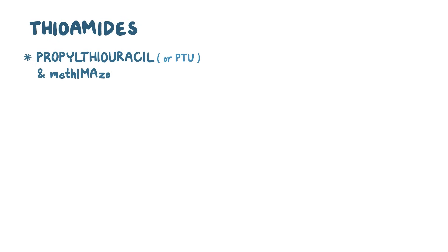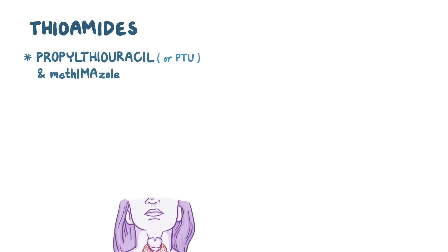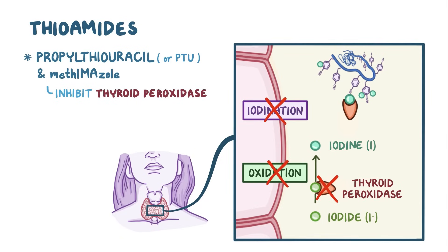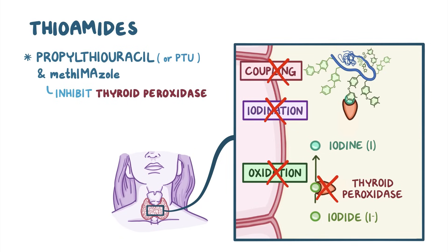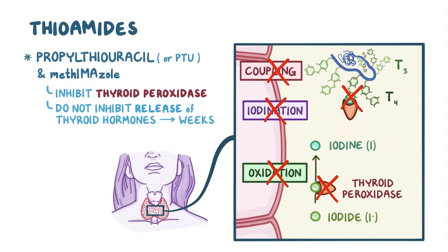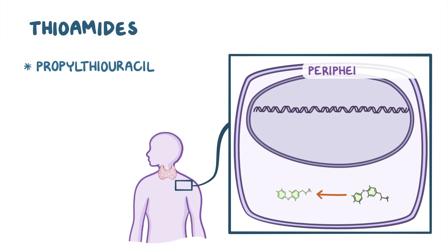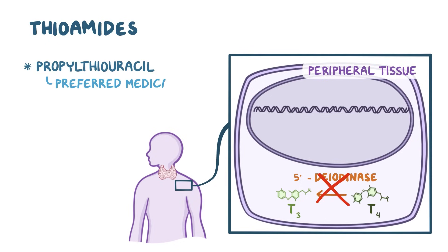Next, we have thioamides, which include propylthiouracil, or PTU, and methimazole. Both medications are given perorally and are absorbed by the thyroid where they inhibit thyroid peroxidase. This stops the oxidation of iodide ions into organic iodine, the iodination of tyrosine residues in thyroglobulin, and the coupling of MIT and DIT to form T3 and T4. It's important to note that these medications do not inhibit the release of thyroid hormones, therefore they require several weeks until the thyroid depletes its storage of hormones to manifest their therapeutic effect. In addition, PTU also works in the peripheral tissue by inhibiting 5-diiodinase to block the conversion of T4 into T3, which makes it the preferred medication during thyroid storms.